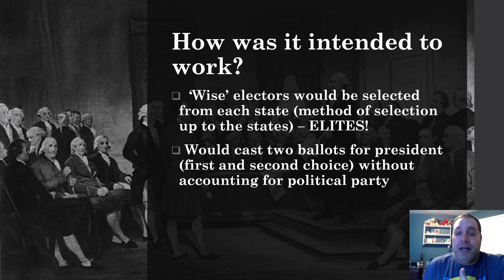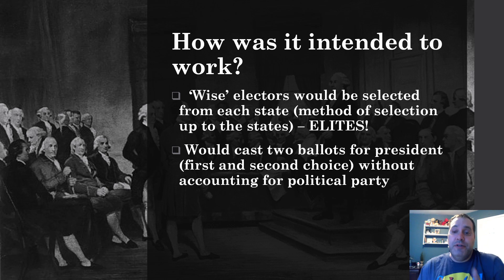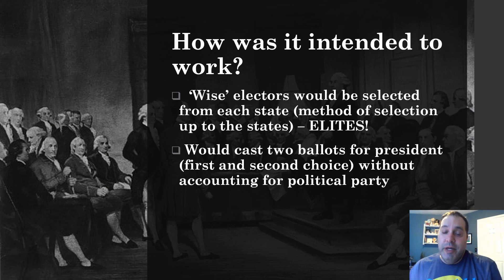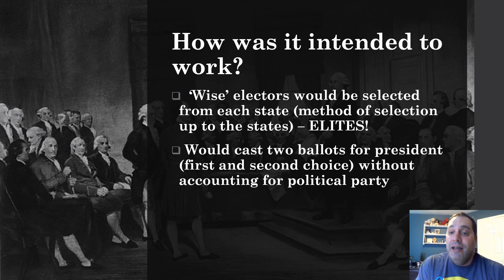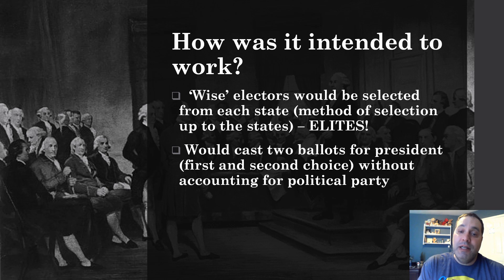The original idea was that each elector was given two votes — two ballots — and they would cast their first choice and second choice, regardless of political party. The person who got the most votes, as long as it was a majority, would be president; whoever finished second would be vice president. That quickly got messed up in 1800 when Thomas Jefferson and Aaron Burr tied, both being Democratic-Republicans. So they passed the 12th Amendment, which says electors cast one ballot for president and a separate ballot for vice president.